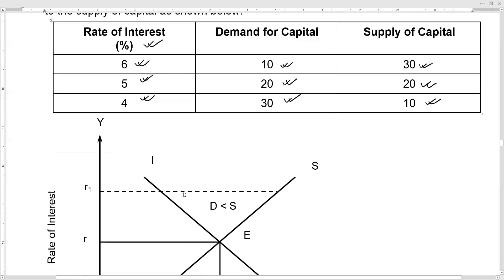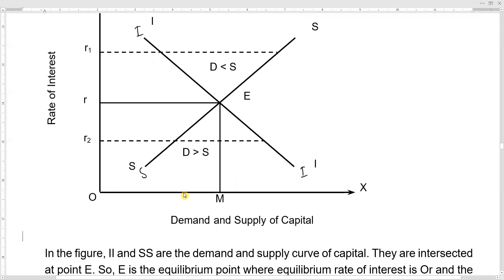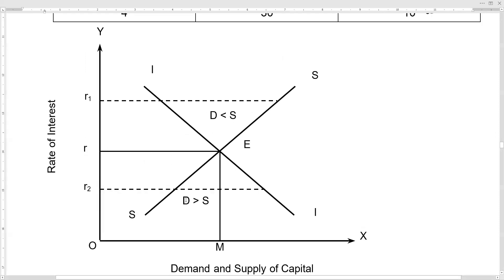Diagrammatically, we represent the investment curve as II and the saving curve as SS. The investment curve slopes downward and the saving curve slopes upward.